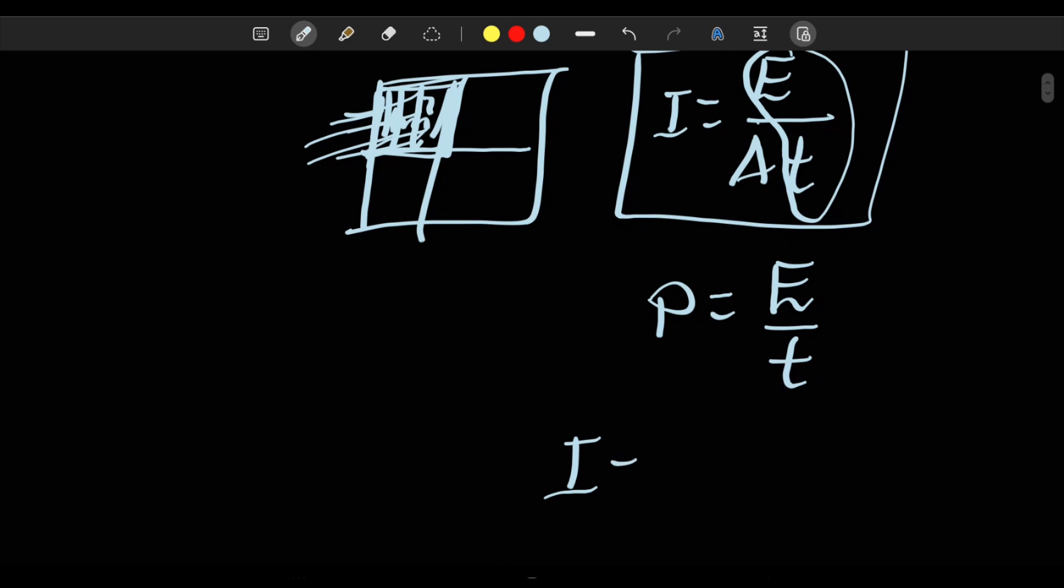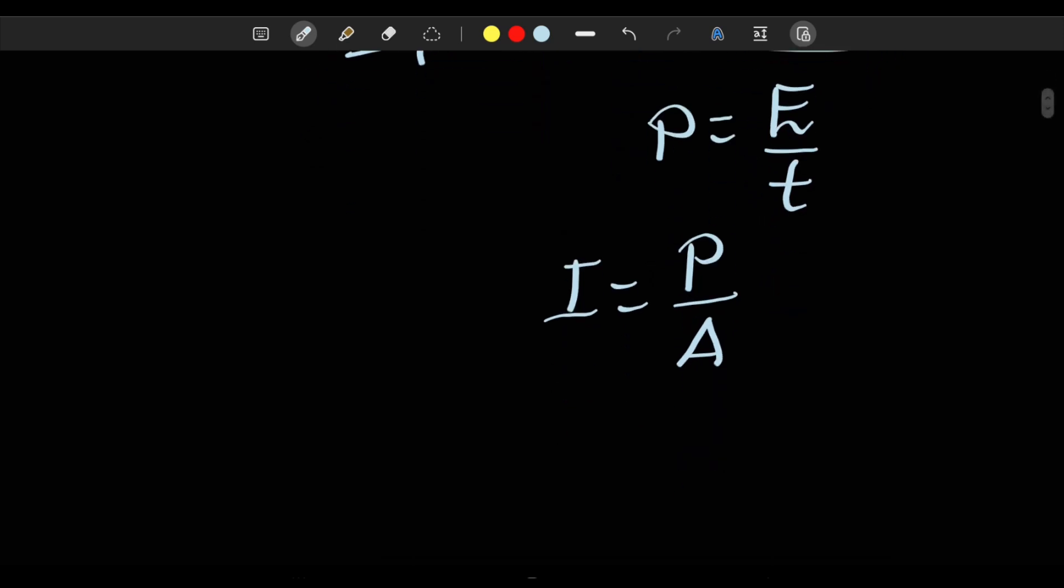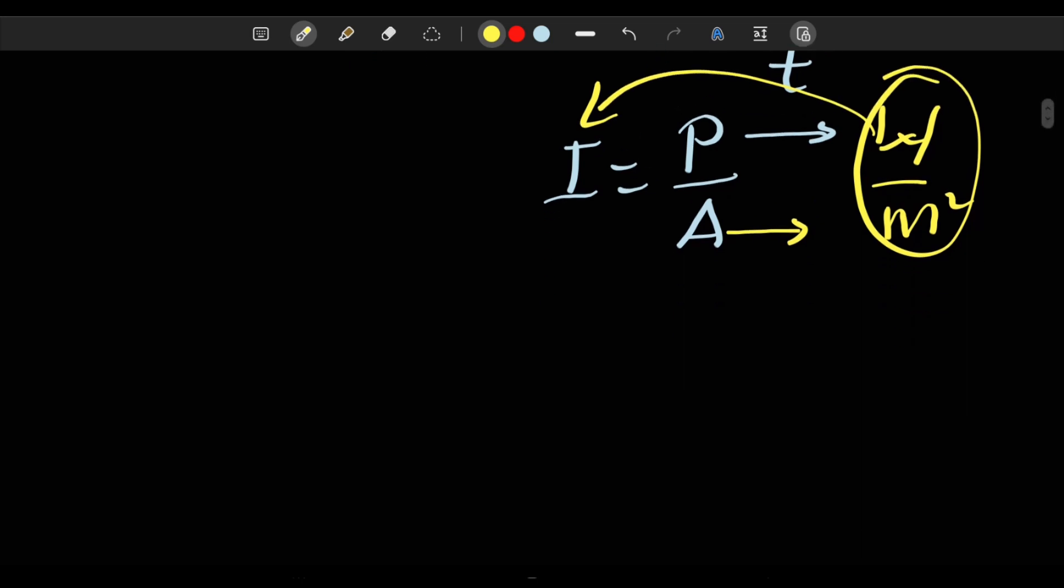Let's say intensity equals, instead of energy over time, we can put power over cross-sectional area. From this you can understand that the SI unit of power is watts, and the SI unit of cross-sectional area is meter squared. So the SI unit of intensity will be watts per meter squared.